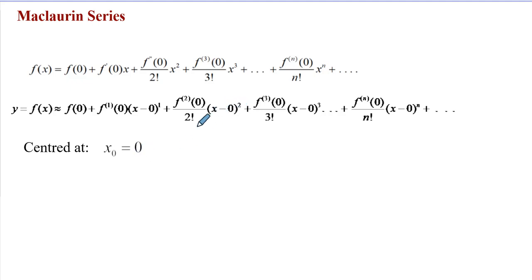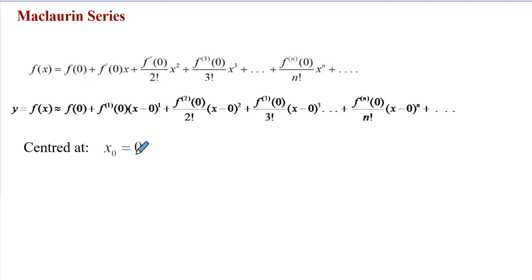A power series expansion developed around x_0 = 0, or around the origin on the number line, is referred to as a Maclaurin series. We can also consider any arbitrary number x_0 not equal to 0 and develop a similar kind of series.